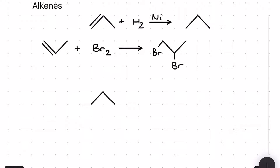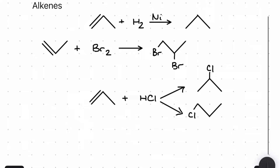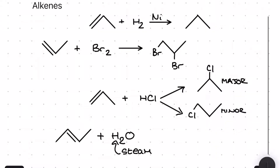For our third reaction we're going to take the same unsymmetrical alkene, propene, and react it with a hydrogen halide. As a result I'm going to make two different structural isomer products — a major product and a minor product. The major product is made from a more stable carbocation intermediate. It should also be noted that the halogen and the hydrogen halide reactions also have the electrophilic addition mechanism as part of your A-level.